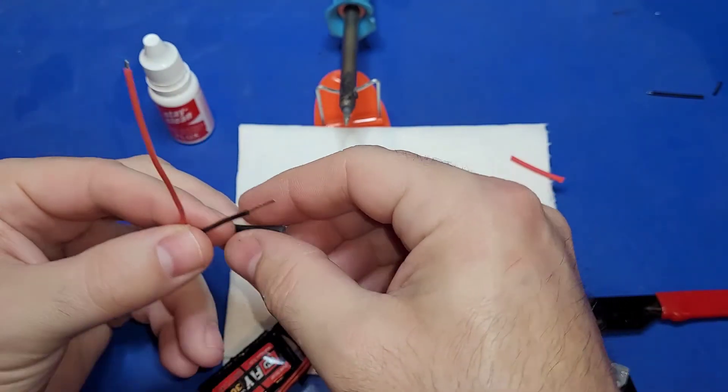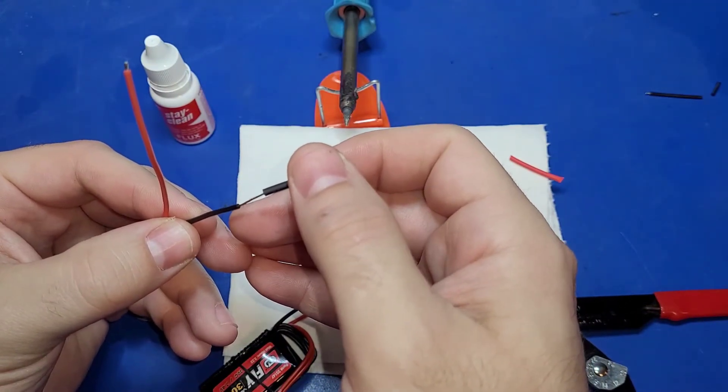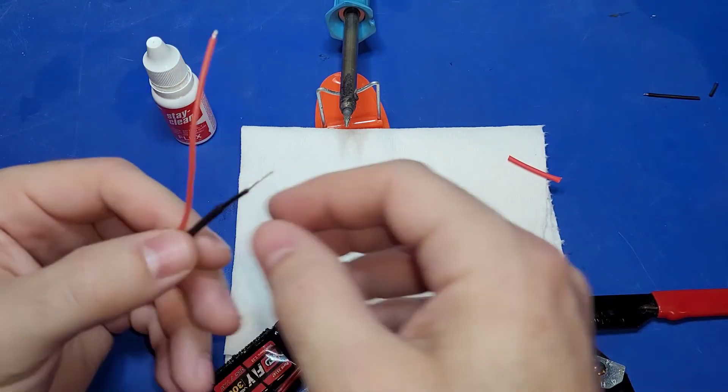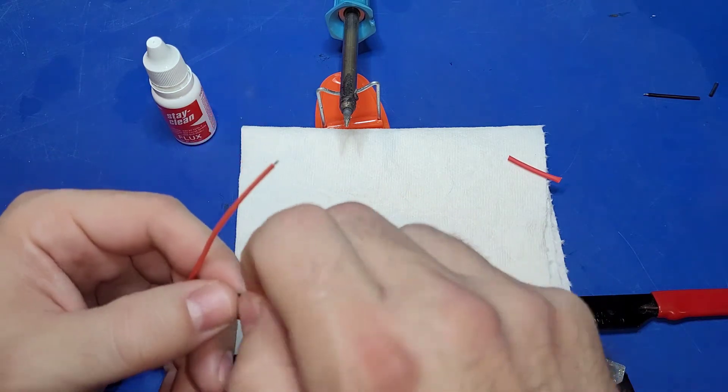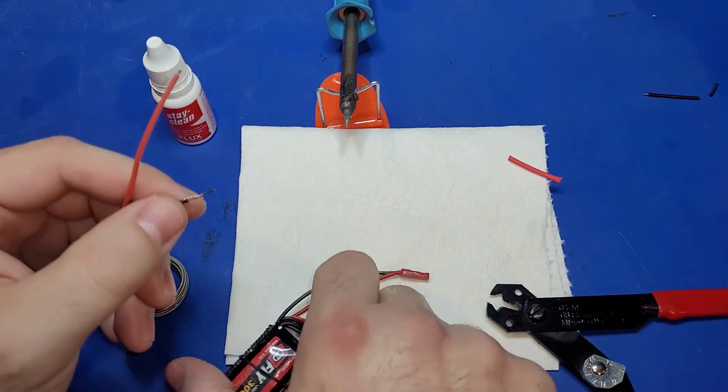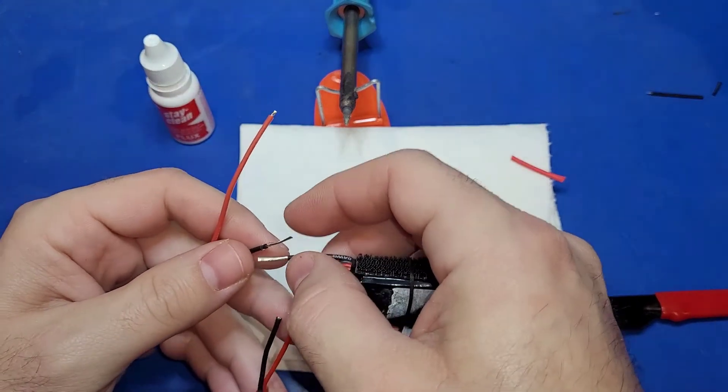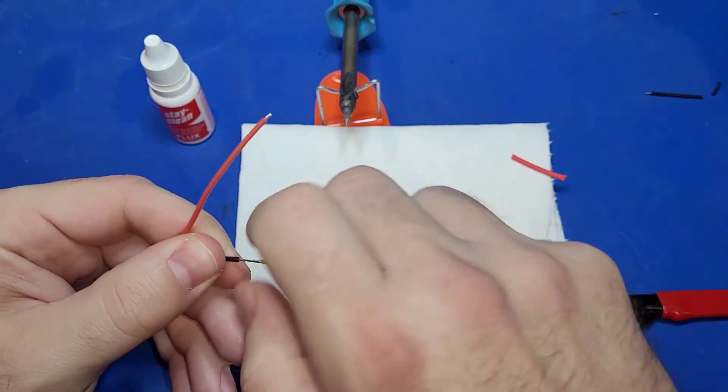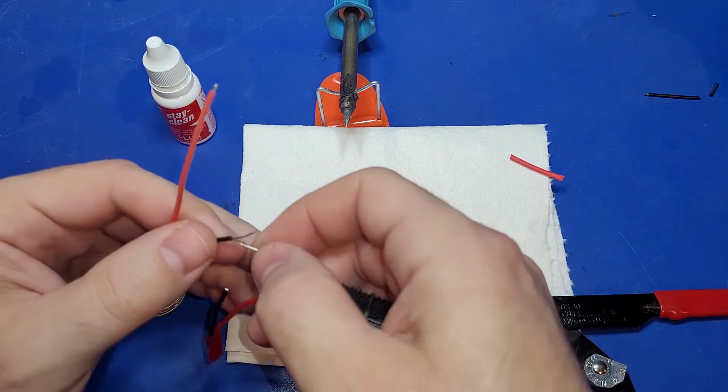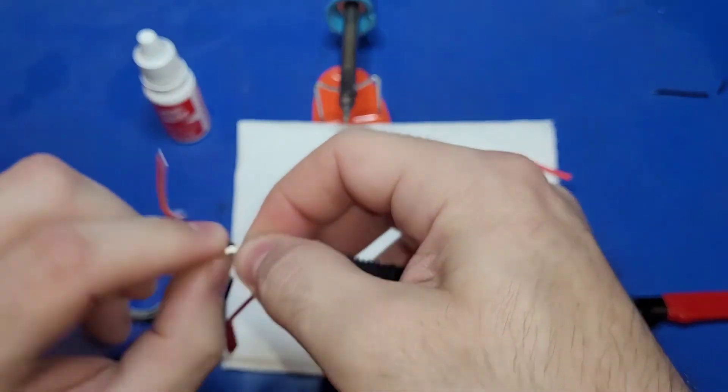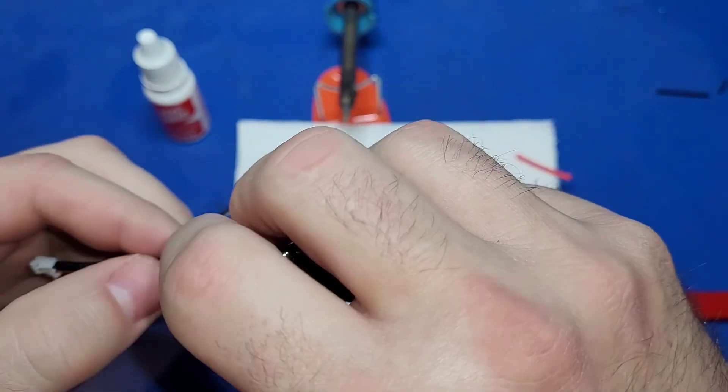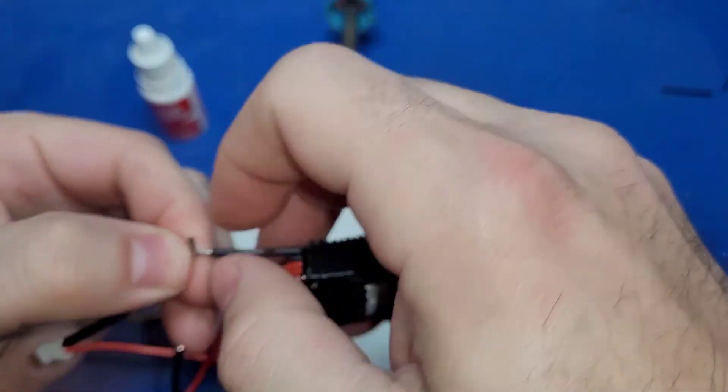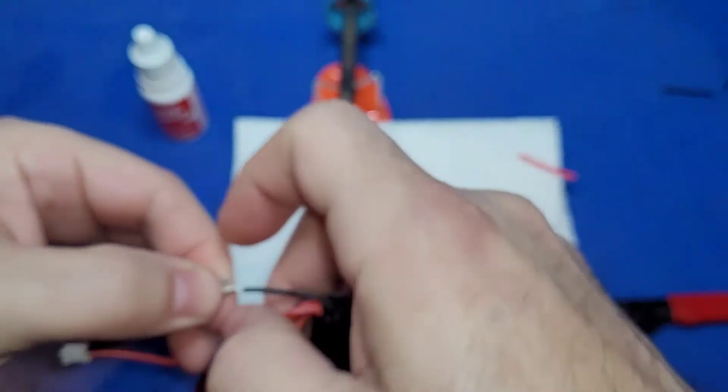At this point, I'll go ahead and put my heat shrink on. Try and get it as far away from where the heat is going to be as possible. I'll just kind of twist them together. Like that. Twisting opposite directions.